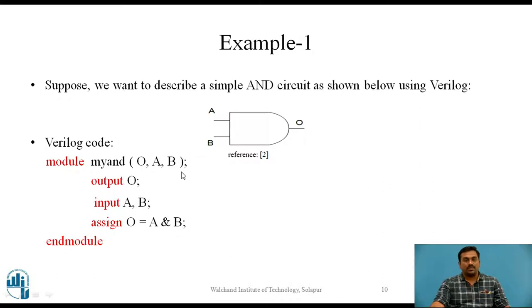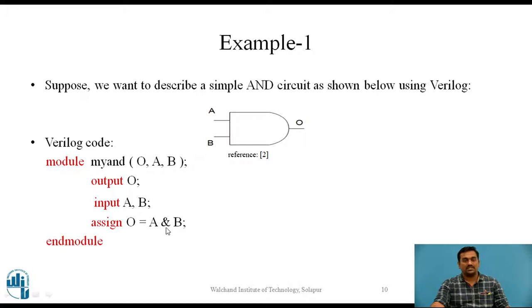The first line of the module must be terminated with a semicolon. After the input definition for A and B, the last line uses the assign keyword. Whatever is on the right hand side is evaluated and assigned to the output O. This AND is a bitwise AND operation on the two input bits A and B, and the result is assigned to the output variable O. This describes the behavior of the circuit, so this is the simple Verilog module definition for an AND gate.